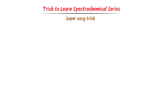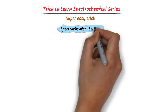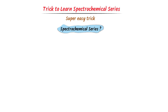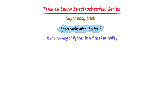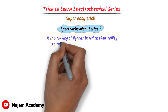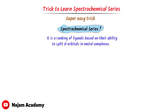Firstly, let me teach you what is a spectrochemical series. Spectrochemical series is a ranking of ligands based on their ability to split d orbitals in metal complexes.